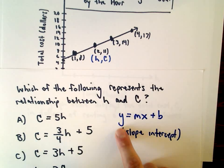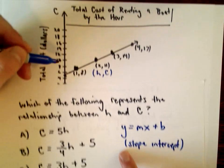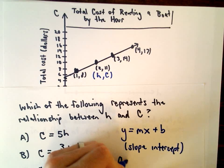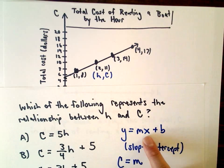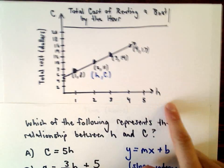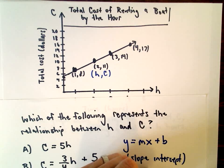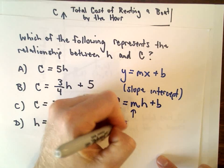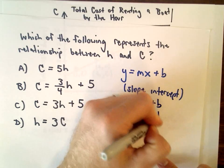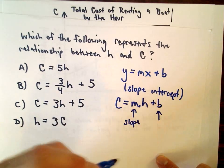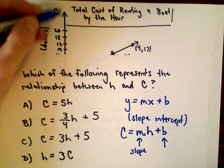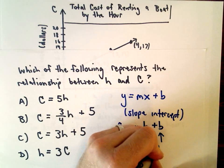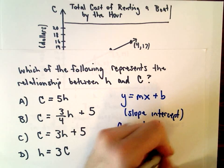Well instead of y, the vertical axis is labeled as capital C. Instead of the variable x, our x-axis is replaced by this variable H, the number of hours. But again, the same thing: M still represents the slope, B still represents the y-intercept, but in this case it would be the c-intercept.